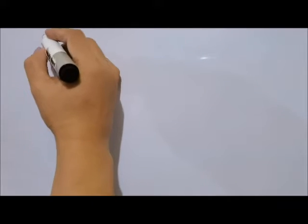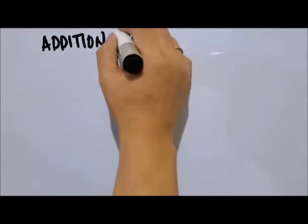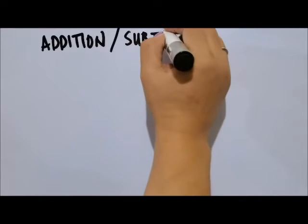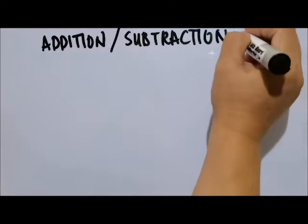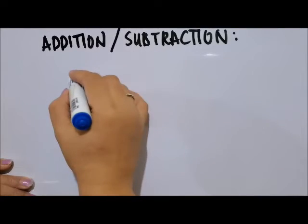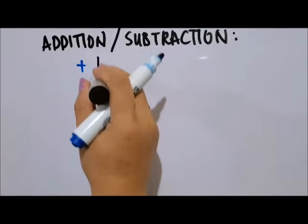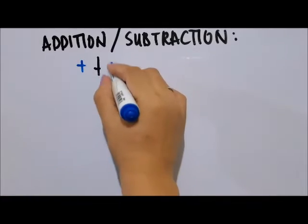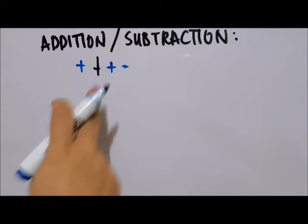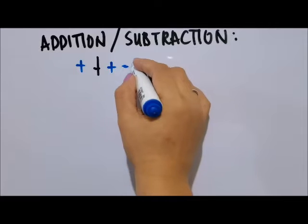For addition and subtraction, the rules are: if the numbers have the same signs — let's say positive plus positive — just add the numbers and keep the sign of the bigger number. So this will be positive.